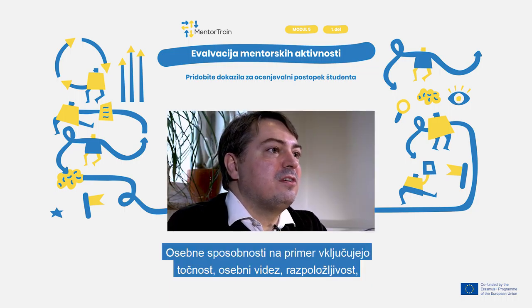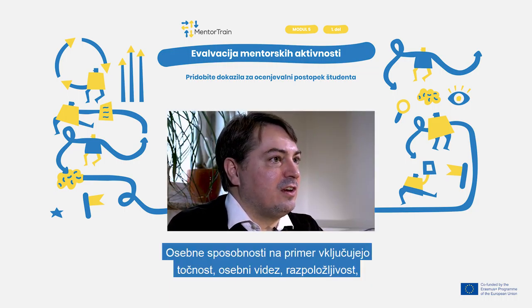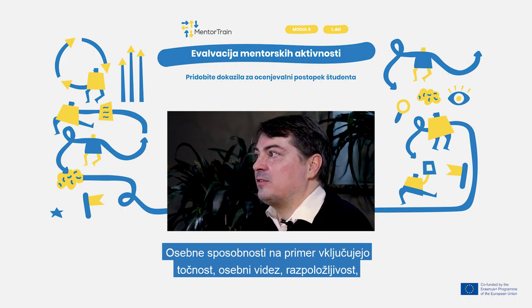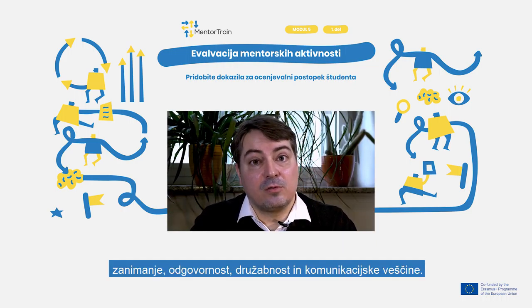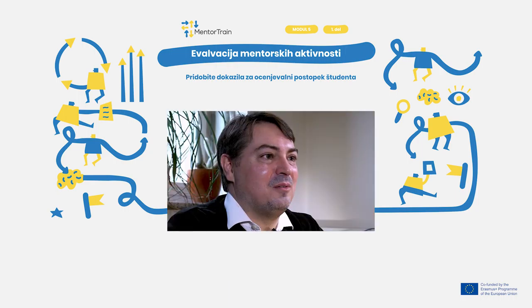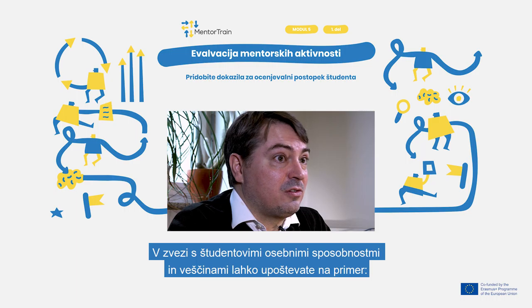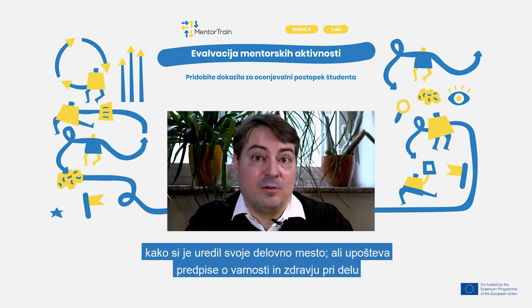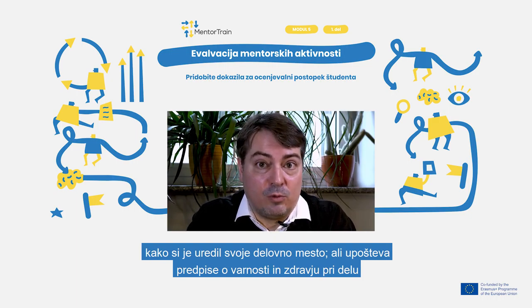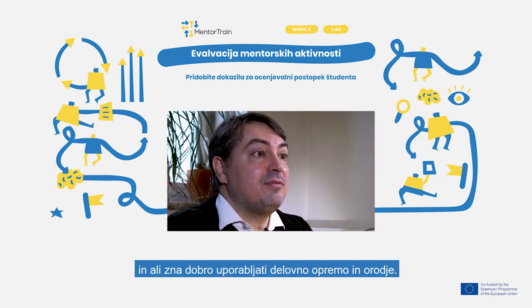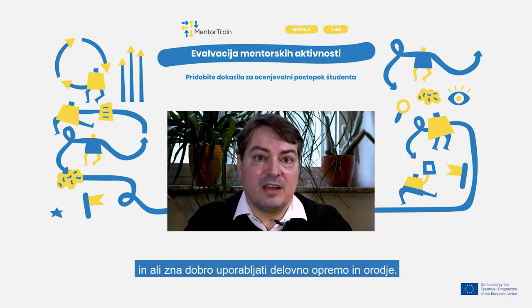Personal competencies would for example include things like punctuality, personal appearance, availability, interest, responsibility, sociability and communication skills. When you consider an apprentice's personal abilities and skills, you could think of things like the way they organize their workplace, their regard for occupational safety and health regulations, and if they have a good command of work equipment and tools.